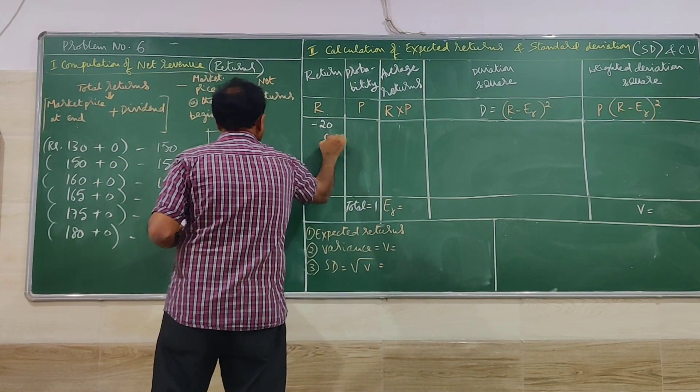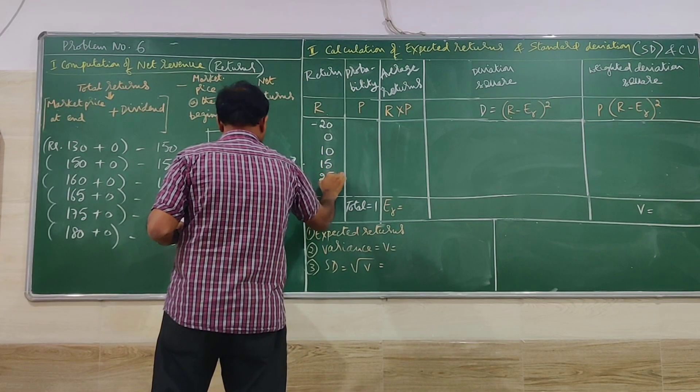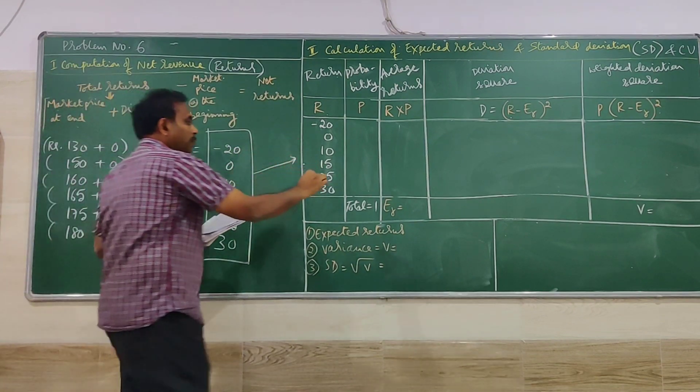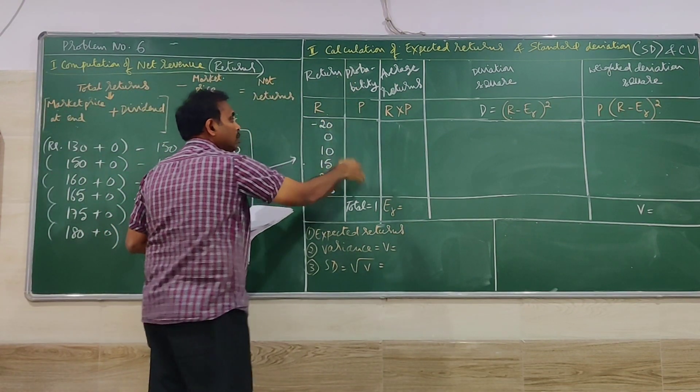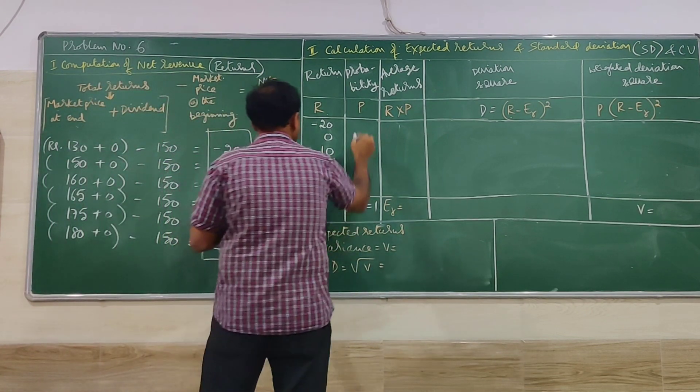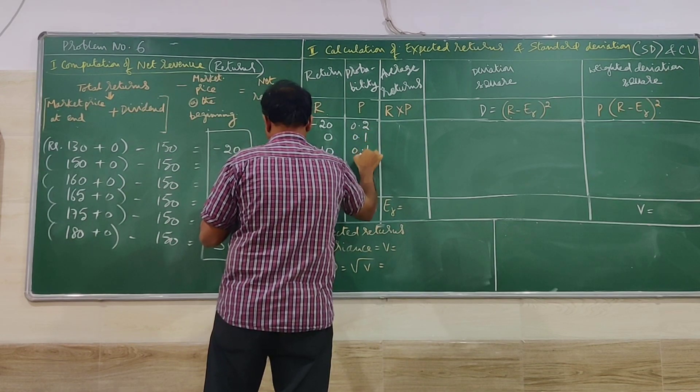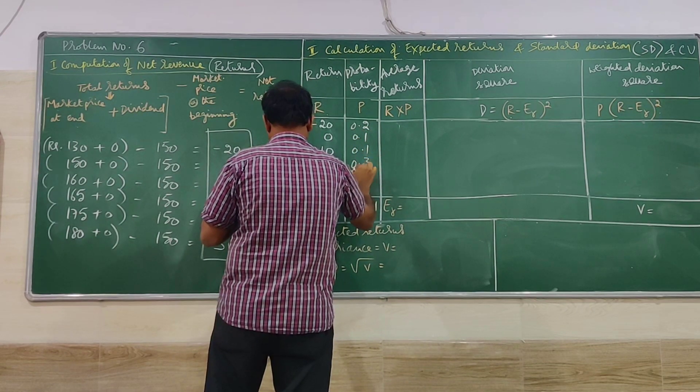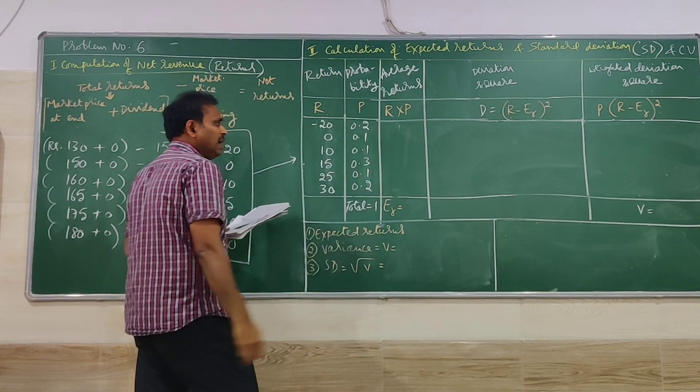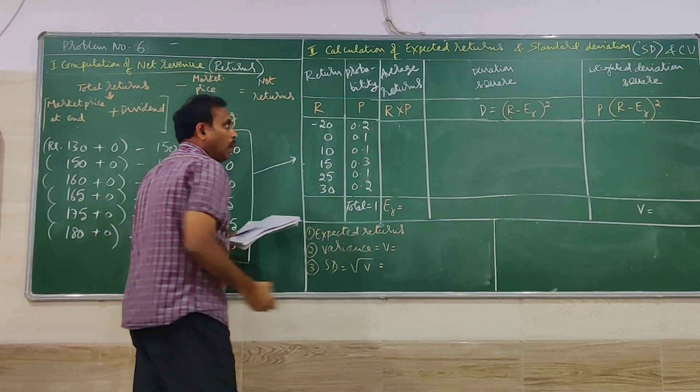So minus 20, 0, 10, 15, 25 and 30. Then from the problem we have to substitute here the probability values, which is 0.2, 0.1, 0.1 again, 0.3, 0.1, 0.2. Again we have checked the total of this probability should be 1.